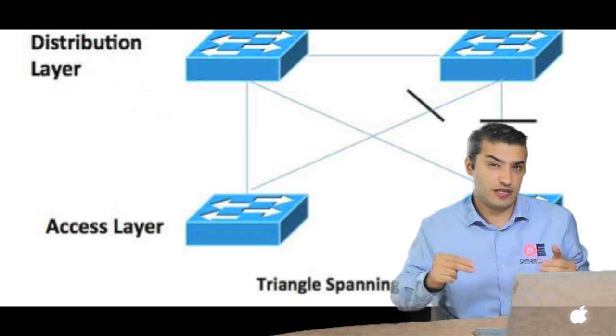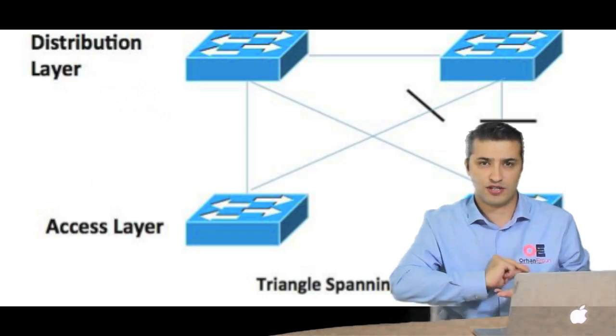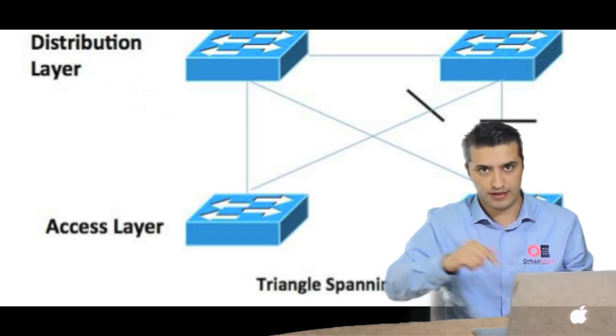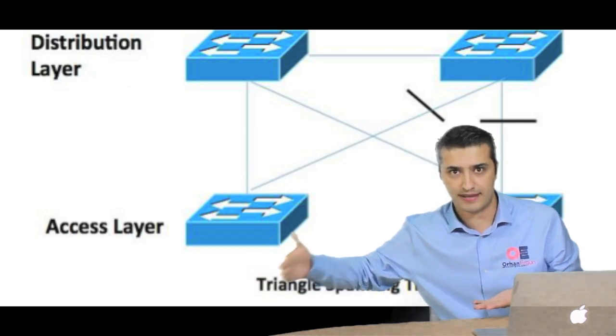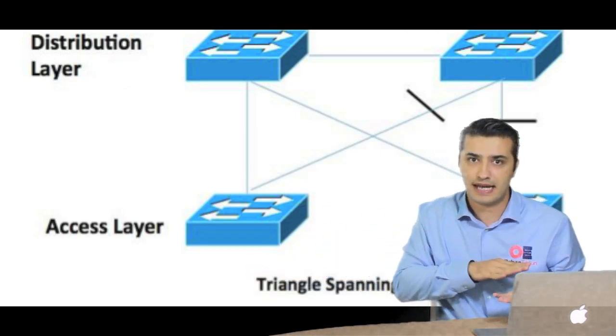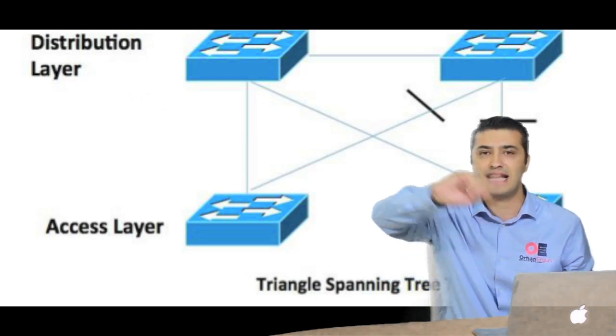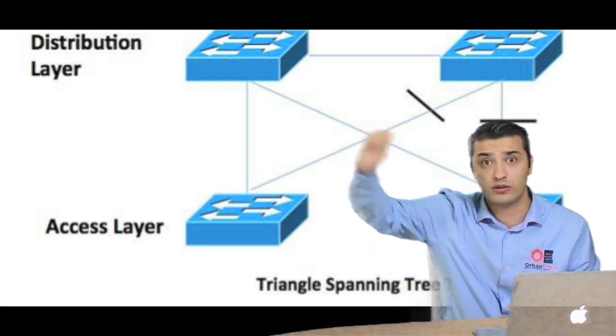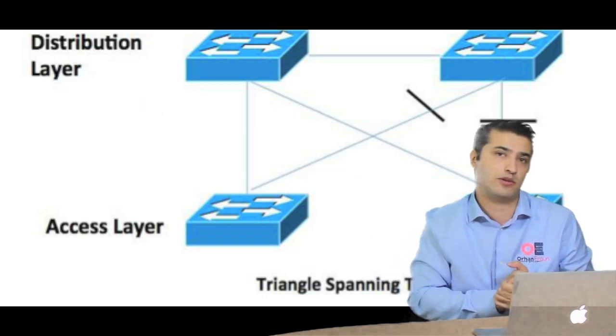Whenever we send a frame, layer 2 frame from the switch, it has to go, this broadcast, unknown unicast and multicast. We also call it BUM traffic. Whenever we send any of this frame, it will be sent to all the other layer 2 switches in the layer 2 domain.